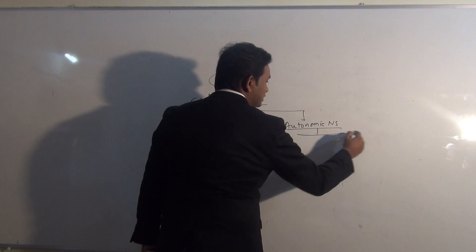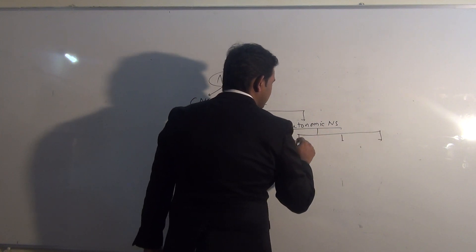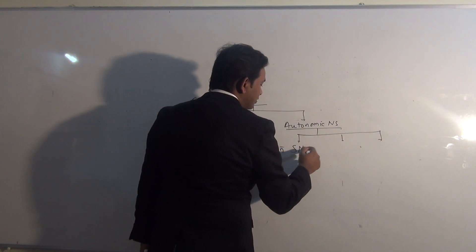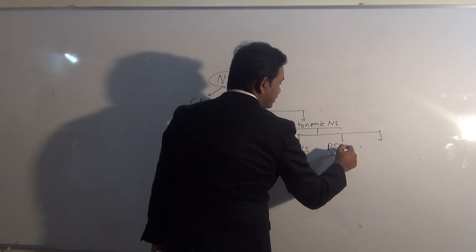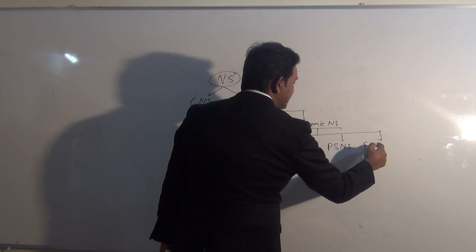The autonomic nervous system is having three components: sympathetic nervous system, parasympathetic nervous system, and the enteric nervous system.